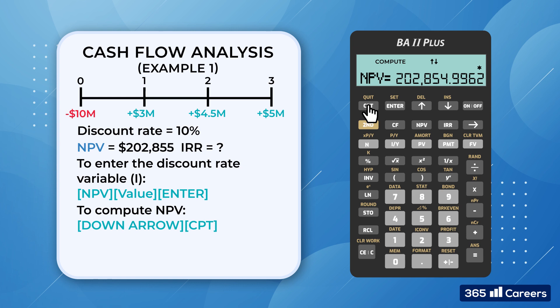What about the project's IRR? No worries, we can easily calculate that as well. This time, we press the IRR button, followed by Compute. The result is 11.06%, rounded to the second decimal point.